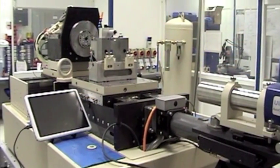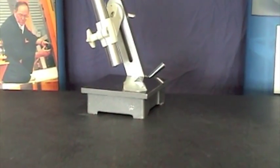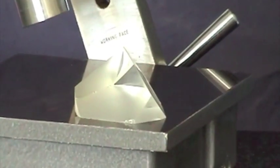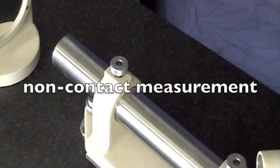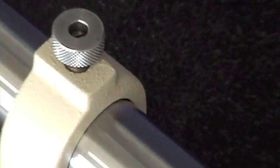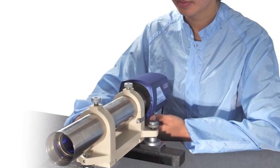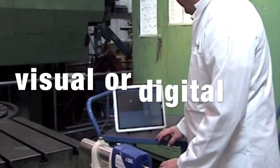Using Taylor Hobson autocollimators has several advantages: high accuracy measurement, easy to set up and operate, non-contact measurement, calibration traceable to international standards, and choice of visual or digital systems.